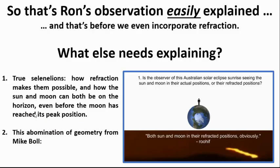So that's Ron's observation easily explained, and we haven't even incorporated any refraction yet. What else needs explaining? Number one, true selenelions, when you can see the fully eclipsed moon and the peak of the sun on the horizon at the same time. We need to talk about how refraction makes them possible, even before the moon has reached its peak three body alignment position. We also need to talk about this absolute abomination of geometry from Mike Boll.